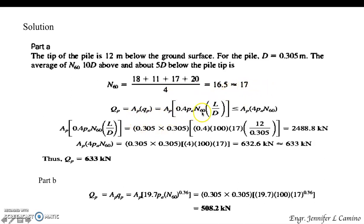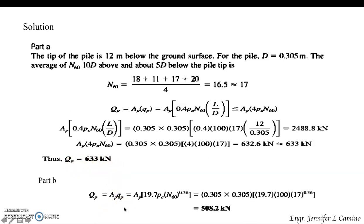Having the value for N sub 60, we compute Q sub P using Meyerhof's equation. Substituting gives 2,488.8 kN, but the limiting expression gives 633 kN. Since 2,488.8 is greater than 633, we use the limiting value: Q sub P is 633 kN. Using Brod's equation and substituting the computed values, Q sub P is 508.2 kN.